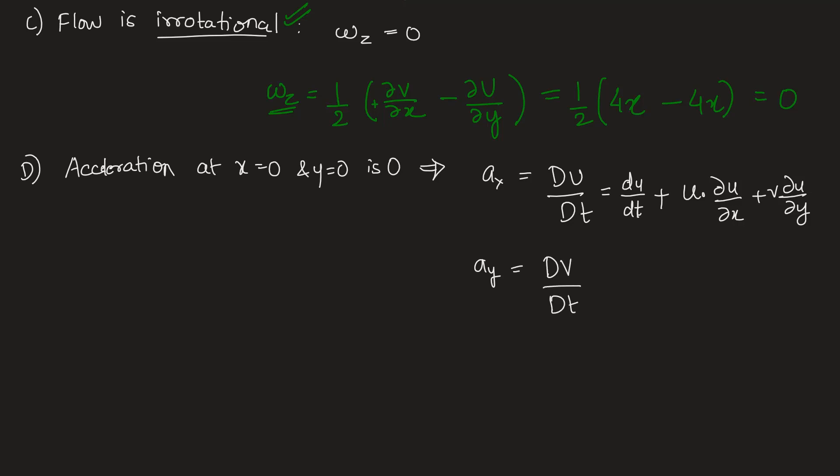Acceleration in y direction equals total derivative of v component with respect to time. This is dv/dt plus u times partial v/partial x plus v times partial v/partial y. Finding these terms, the time differentials are both zero because velocity field is not time dependent—it is given to be 4xy i plus 2 times x squared minus y squared j. There is no dependence on time, so derivative with respect to time is zero.